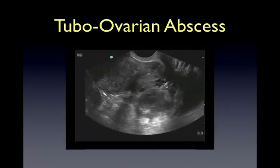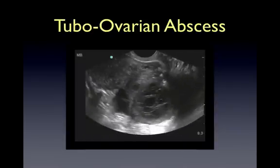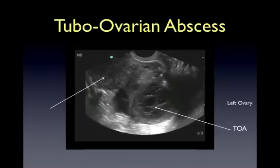A complication of pelvic inflammatory disease includes the formation of tubo-ovarian abscesses. This appears as an ovarian mass containing loculations or hypoechoic purulent material which sometimes moves when pressed upon.